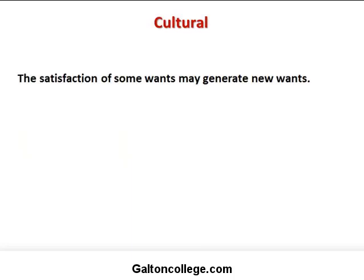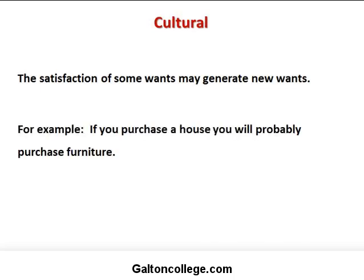The satisfaction of some wants may generate new wants. For example, if you purchase a house you'll probably purchase furniture — you wanted the house, you bought it, but now you have to buy furniture. So the satisfaction of one want generates another; wants can be linked. If we buy a car, then we have a demand for petrol or diesel.